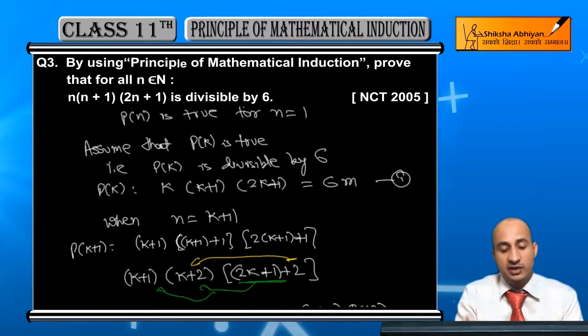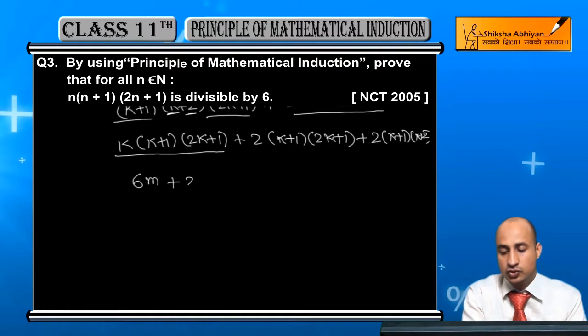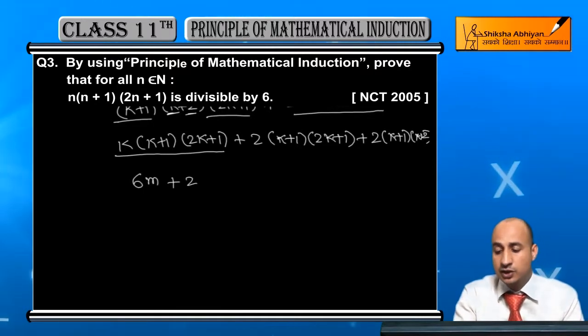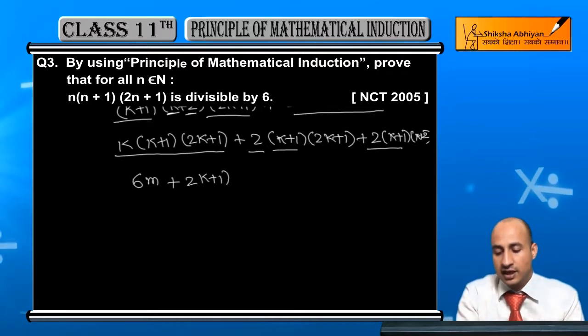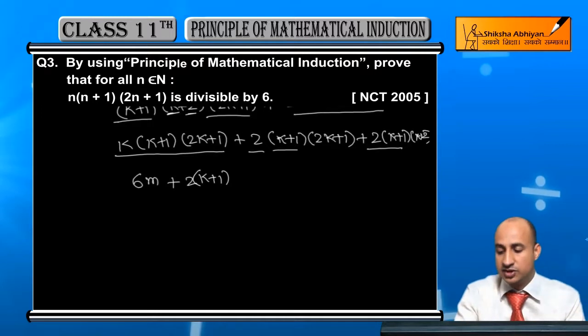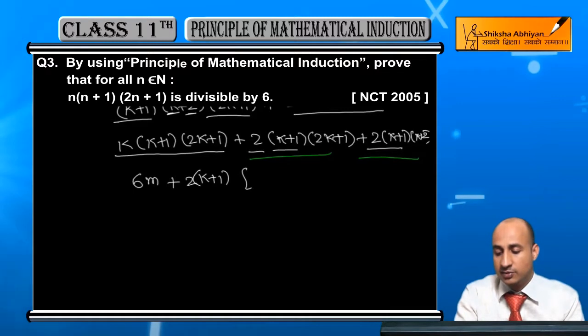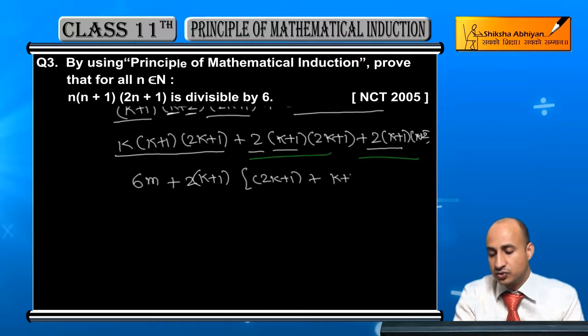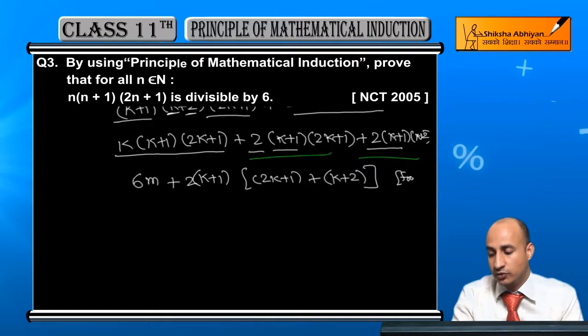Now student, K into K plus 1 into 2K plus 1 from equation 1: K into K plus 1 into 2K plus 1 equals 6M. So I will write here 6M equals to plus 2. From equation 1. Now you see, this will become 2K plus 1. 2K plus 1 and 2K plus 1 are common, so I will take 2K plus 1.